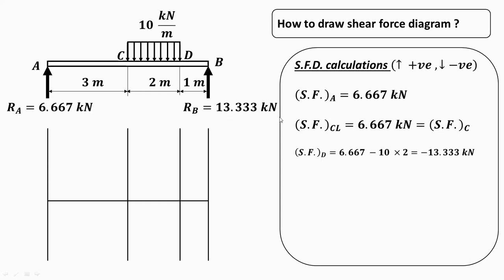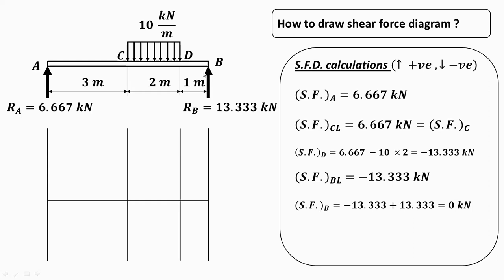For shear force at point D, we consider all forces on the left-hand side of D. Ra acts upward (positive), and the UDL of 10 kN/m over 2 m is converted to a point load of 20 kN downward, giving a shear force of minus 13.333 kN at D. Since no other load acts between D and B, shear force at B-left is also minus 13.333 kN. At point B, the upward reaction of 13.333 kN adds to this, giving zero kilonewtons.